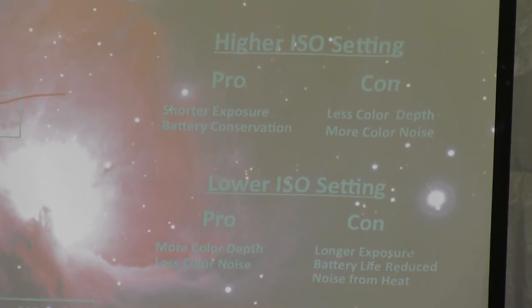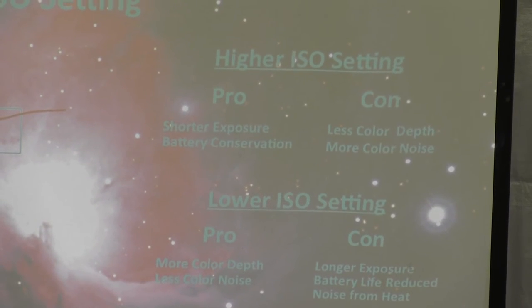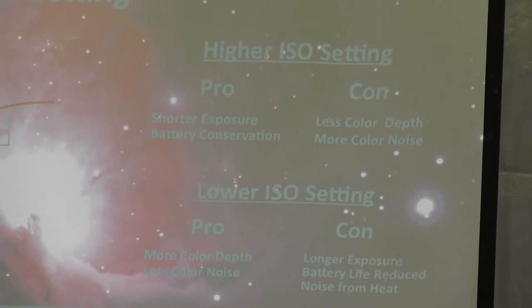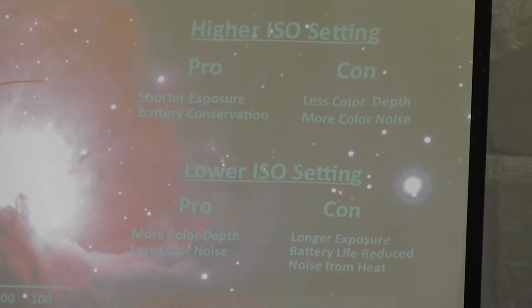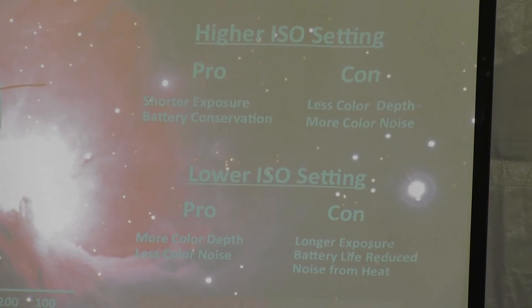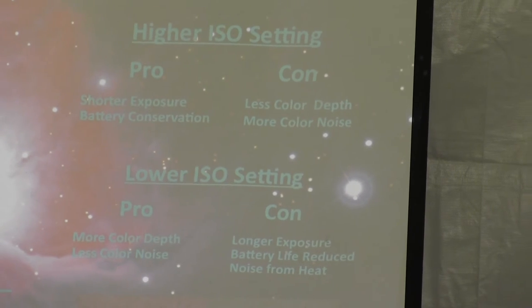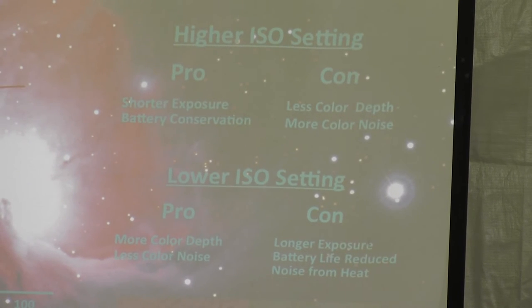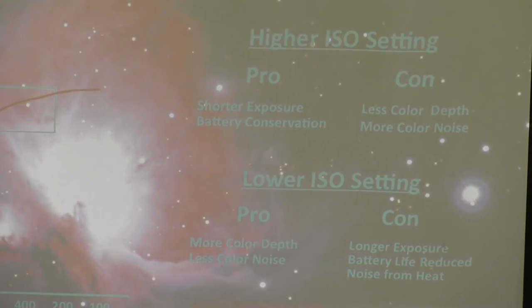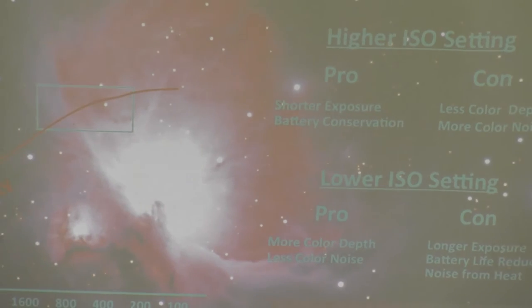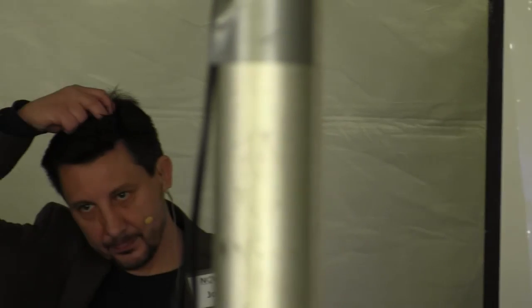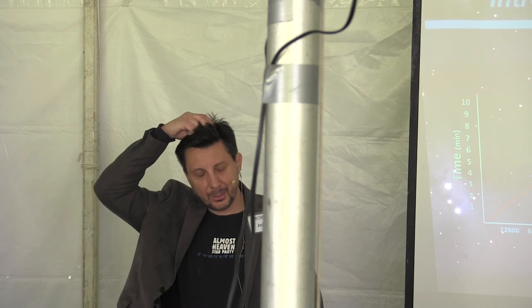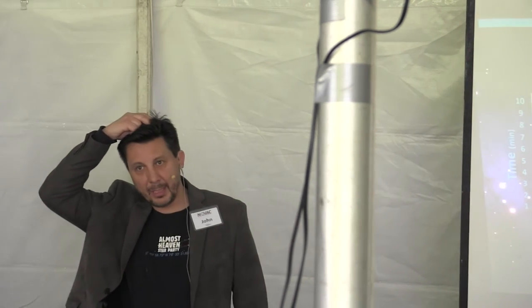The pros are shorter exposures, you're saving battery, but less color depth and more color noise. If you're taking a quick picture, you're not collecting a whole lot of data. The data you just collected in that instant is being amplified. But if you do 400, or 100, or 200, you're collecting more data over a longer period of time, and your pictures will be cleaner, sharper, with more changes in color. You'll begin to see definition.